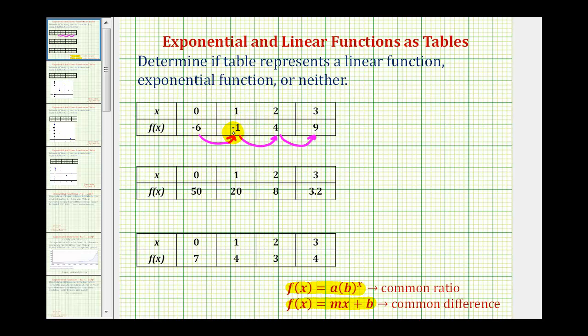So if we take -1 and subtract -6, that would be -1 + 6 or positive 5, which is telling us, if this is linear, we're adding 5 to each function value. Let's see if that's true. -6 + 5 is -1. -1 + 5 is positive 4, and 4 + 5 is 9. Therefore, all these function values do have a common difference of 5, which means it's a linear function. Of course, we could also graph these points to see if it's linear, which we'll do at the very end.